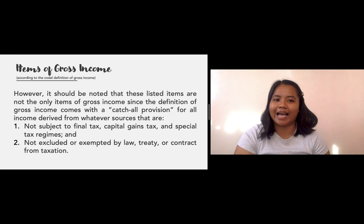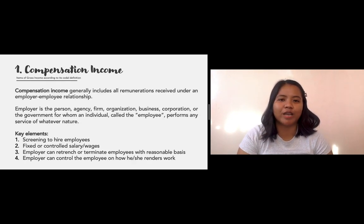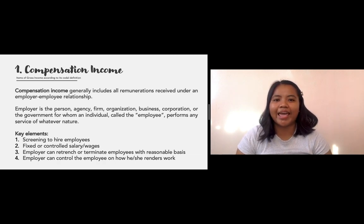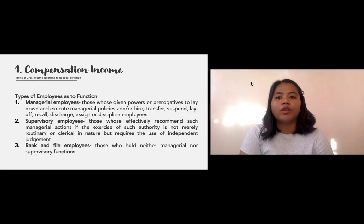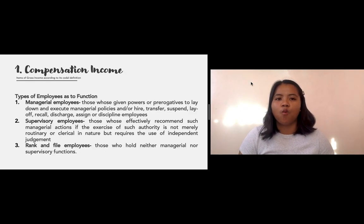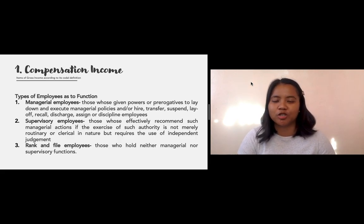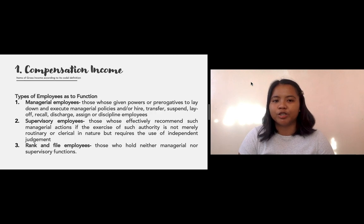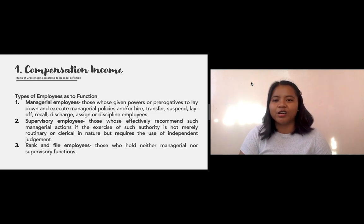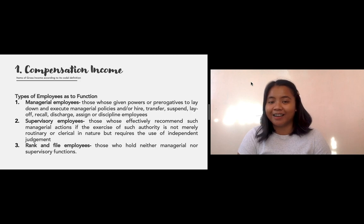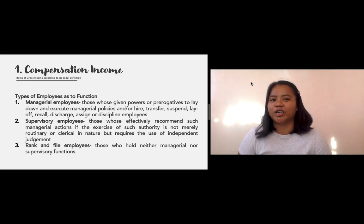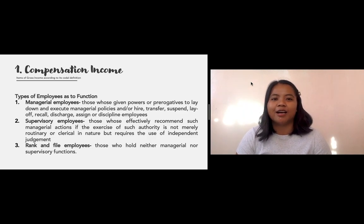So that's what gross income means. Now let's go through each item in the codal definition, starting with the first one: compensation income. There are three types of employees based on function. Number one are managerial employees — those given powers or prerogatives to lay down and execute managerial policies in the company. We also have supervisory employees, who effectively recommend managerial actions where the exercise of authority requires independent judgment, not merely routine or clerical work. These managerial and supervisory employees are those at the top of the company or business.